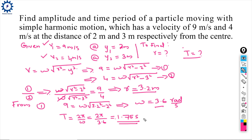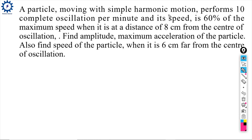A particle moving with simple harmonic motion performs 10 complete oscillations per minute, and its speed is 60% of the maximum speed when it is at a distance of 8 centimeters from the center of oscillation. Find the amplitude, maximum acceleration of the particle. Given: frequency f = 10/60 = 1/6 Hz.